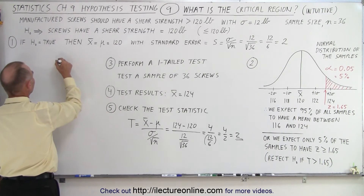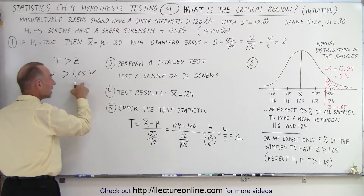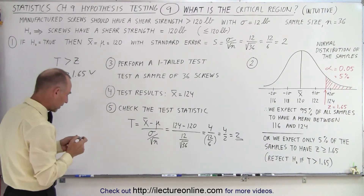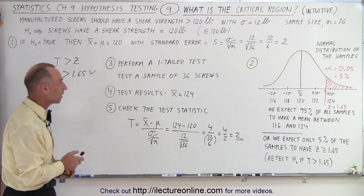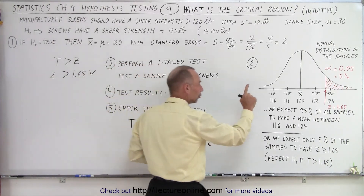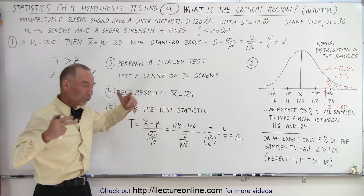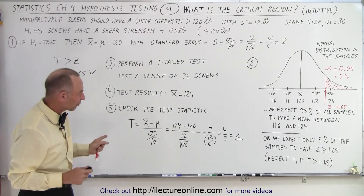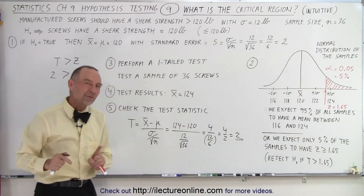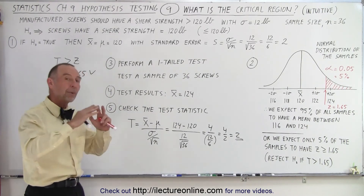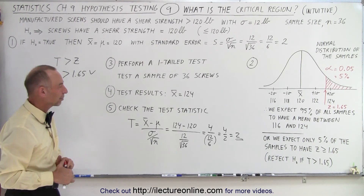We can see clearly that T is greater than Z — 2 is greater than 1.65. In that case, we reject the null hypothesis. The null hypothesis was that the screws have a shear strength of 120 pounds or less. So with our one sample of 36 screws, where the mean shear strength was 124 pounds, that was sufficient to determine that the test statistic falls inside the critical region. We have a 95% probability of being correct that the population of screws has a shear strength greater than 120 pounds on average.